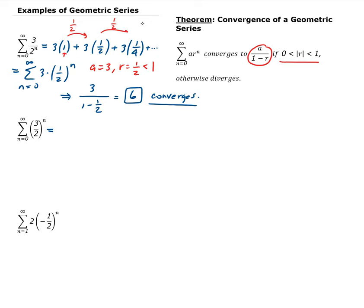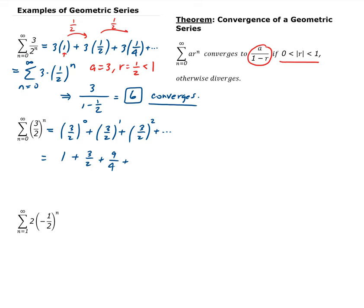Let's expand this one out for the first few terms. When n is 0, we get 1. The next term is 3 halves to the first power, then 3 halves to the second power, and so on. This gives us 1 plus 3 halves plus 9 fourths. So a is 1, and r is 3 halves.